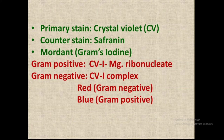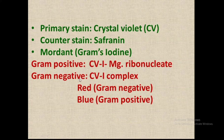Gram positive bacteria contain magnesium ribonucleate, which is absent in gram negative bacteria. On staining gram positive bacteria with crystal violet, a crystal violet–iodine–magnesium ribonucleate complex is formed. On staining gram negative bacteria with crystal violet, only a crystal violet–iodine complex is formed due to the absence of magnesium ribonucleate.